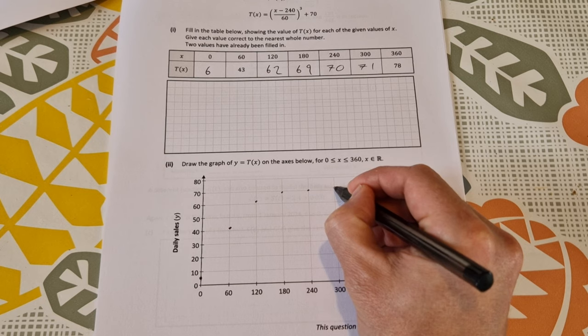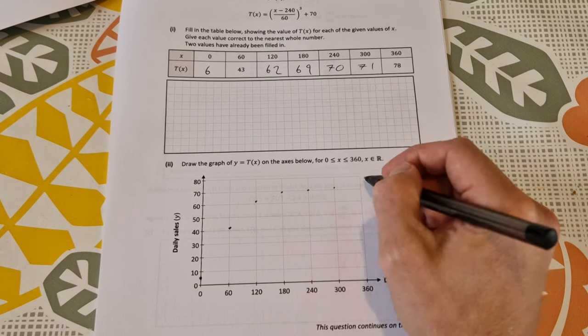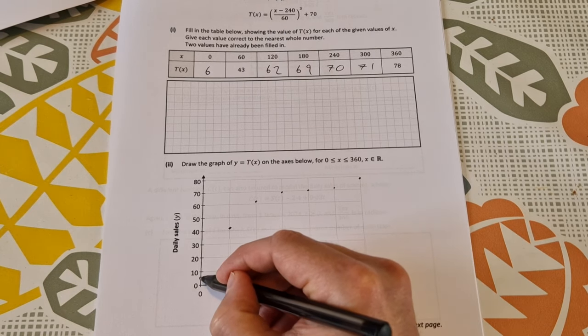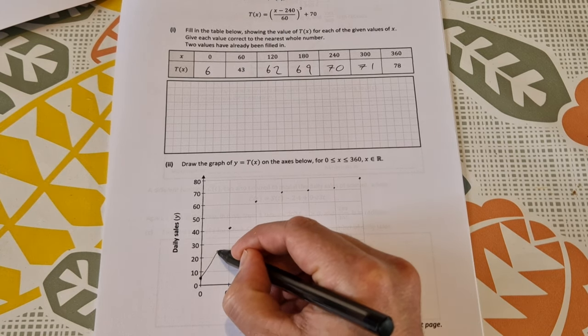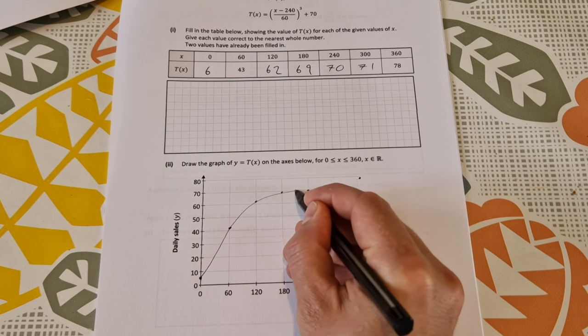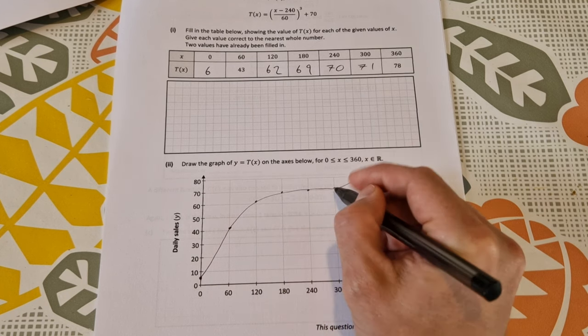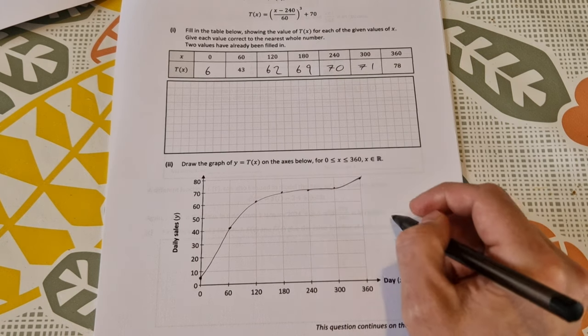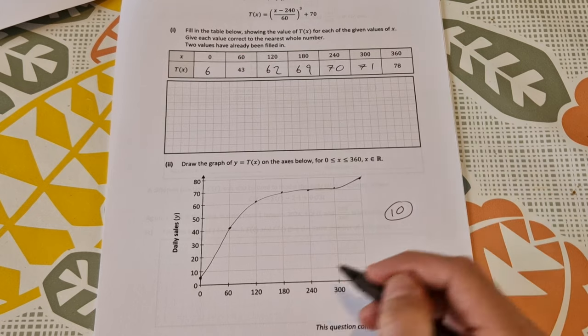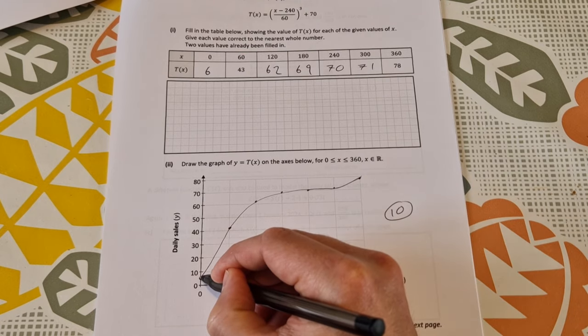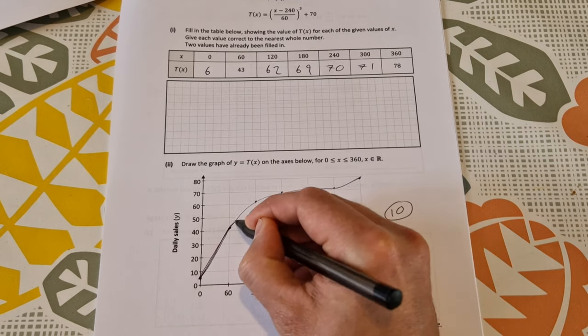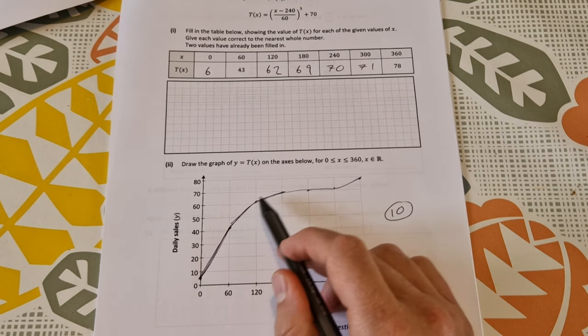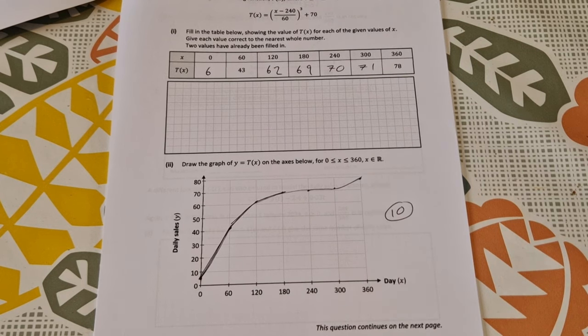Then 300, 71 around about there, and 360, 78 which is around about there. To draw the graph, you also have to join the dots. Very important when you're joining these dots that you use a curve and not line segments. If you do line segments you will only get nine marks where you should be getting 10. You have to do a nice smooth curve. It doesn't have to be perfect but it does have to be a curve.